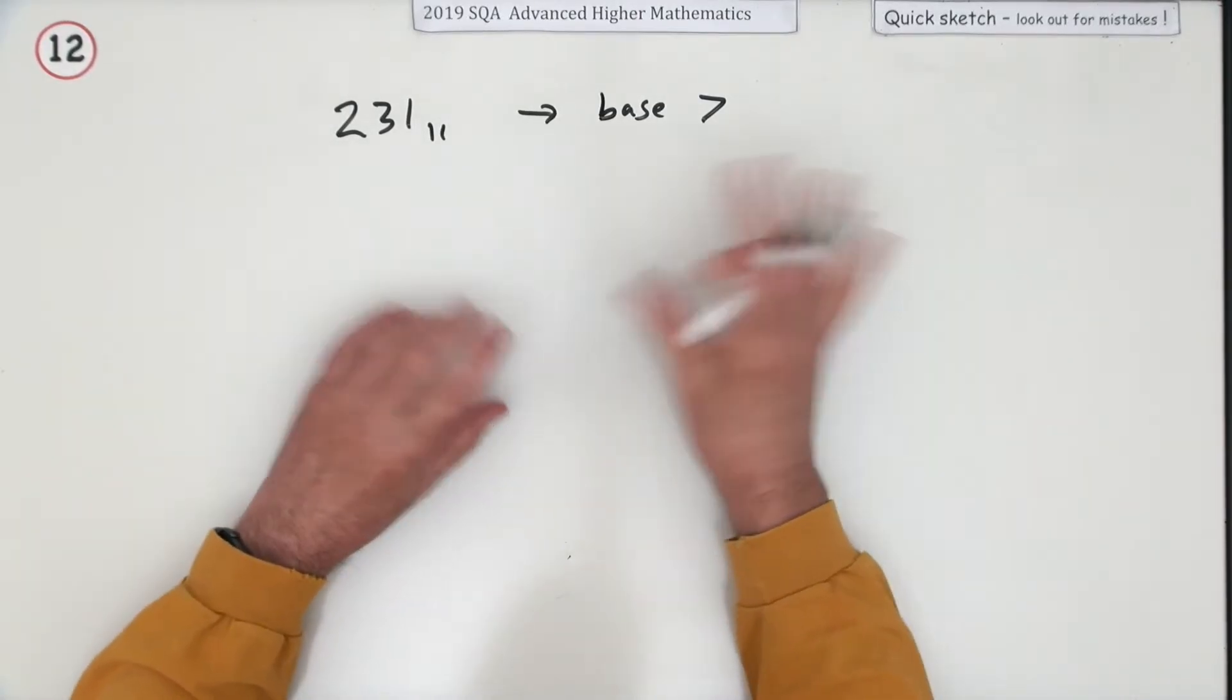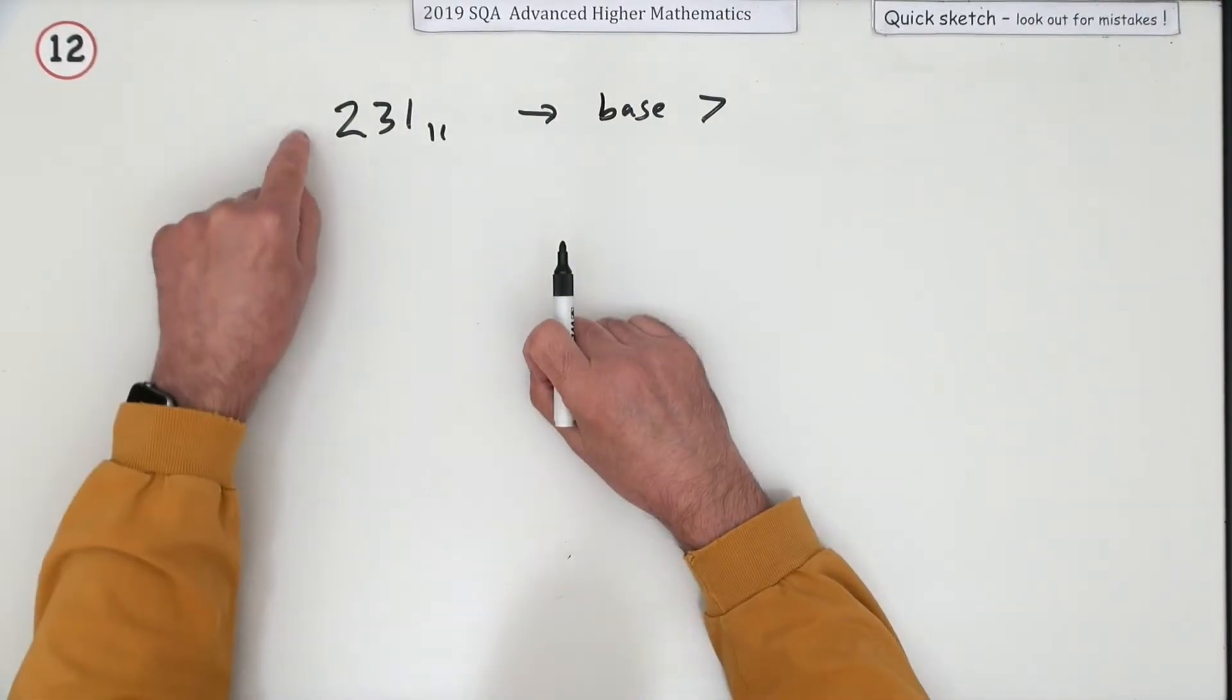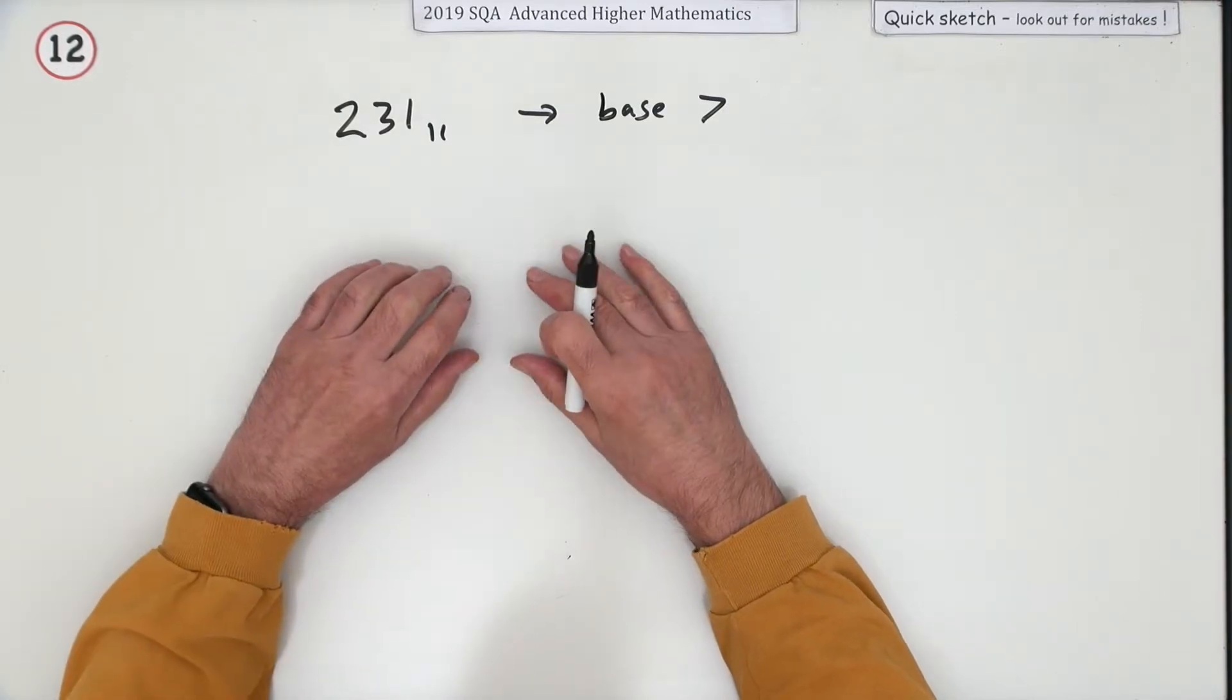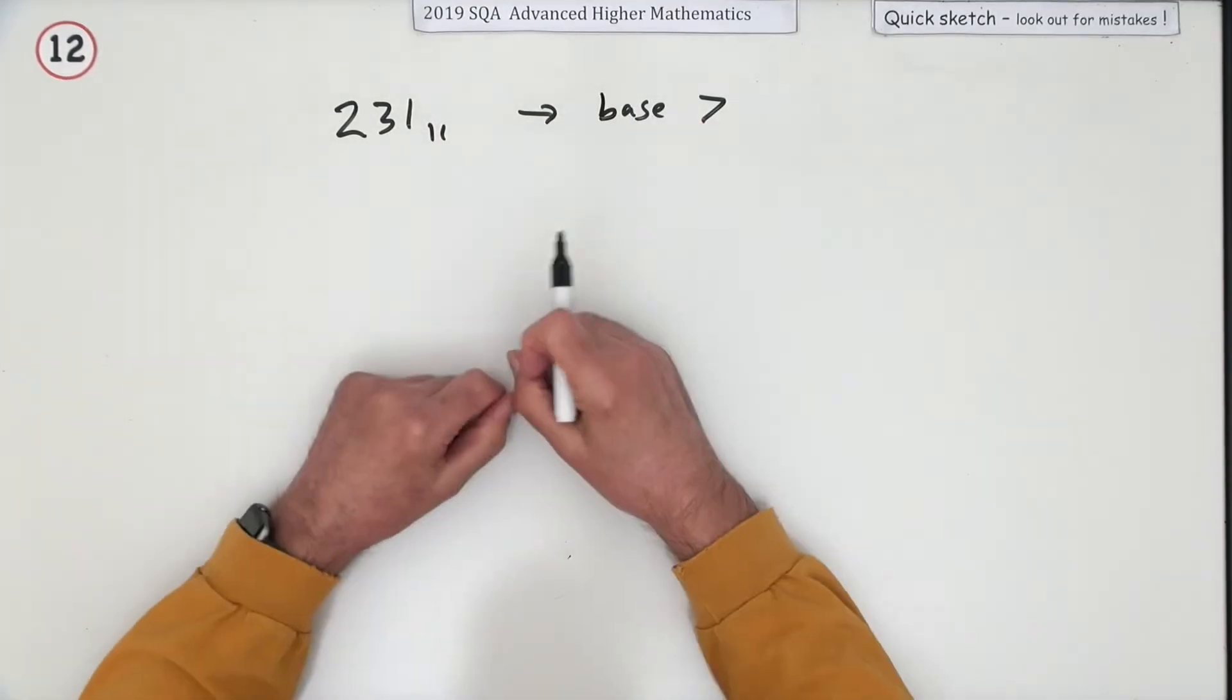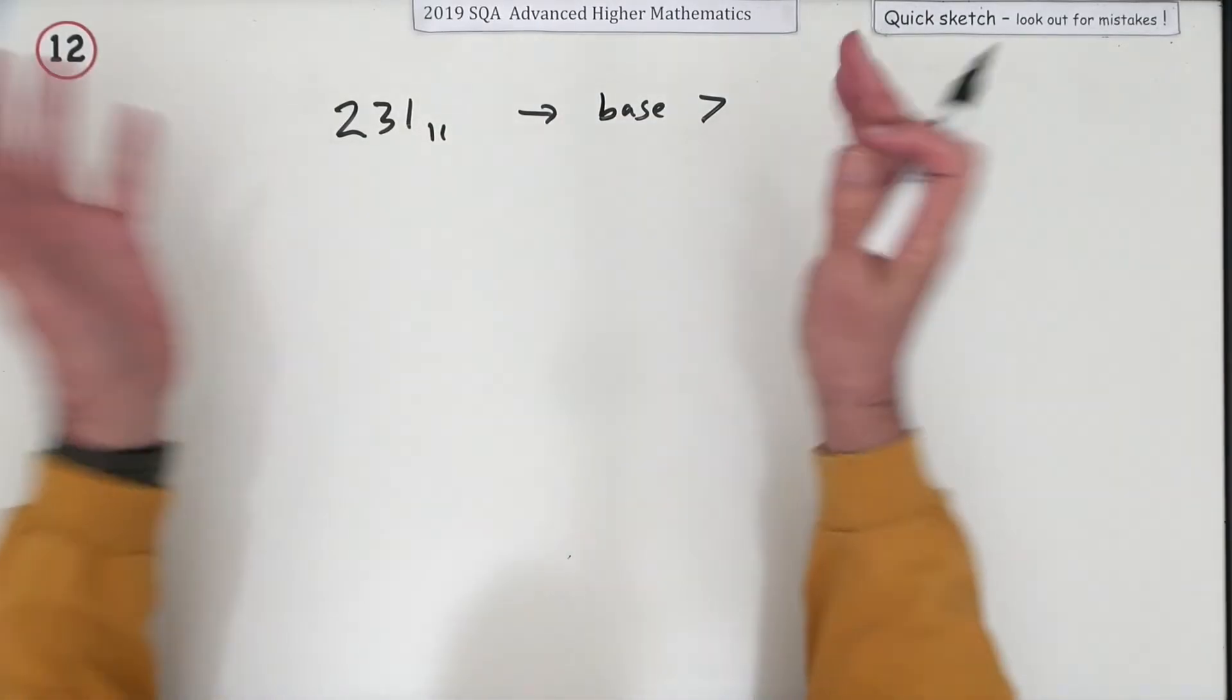But this business about number bases used to be in the old Grade Arithmetic back in the 60s and 70s and 80s. Old Grade Arithmetic was separate from Old Grade Maths. That was the exam that was sat by the ones that couldn't do the maths, and here it is in the Advanced Higher.